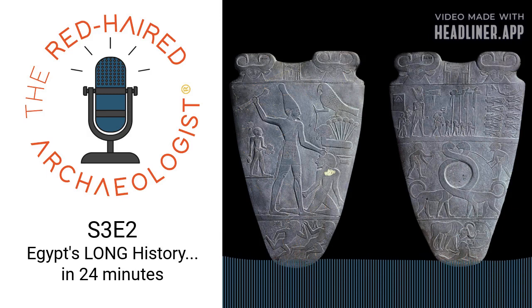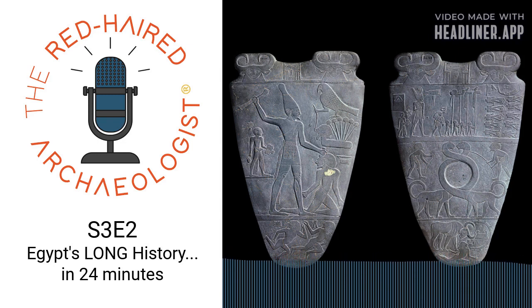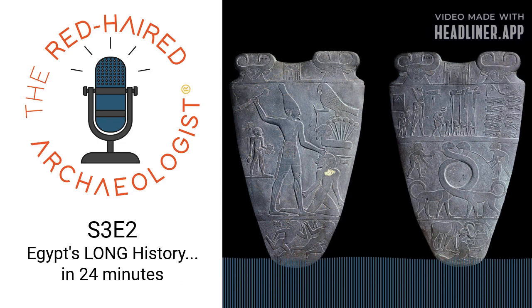Prehistory really just means a time before writing had been invented, or a time before archaeologists have discovered writing somewhere. So in Egypt, between about 5,000 and 3,000 BCE, the people living there were indigenous, living on the land in tribes — not too different from the tribes we see in Joshua and Judges, but Egypt had this sort of social construction about 2,000 years before Israel did.